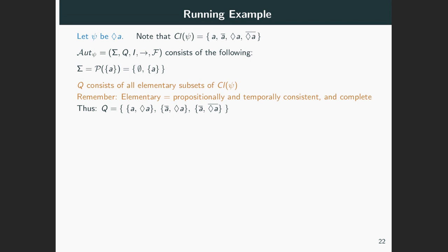For example, A together with not eventually A is not in the set of states because it would not be possible as a scenario. Now the initial states of our automaton, the elements of the set I, are those scenarios that contain our formula Psi.